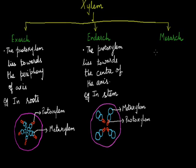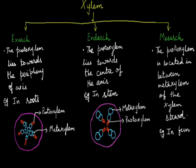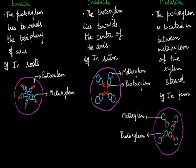The third condition is mesarch, in which the proto-xylem lies between the meta-xylem. The mesarch condition is found mainly in stems. In the diagram, the proto-xylem element is present in between the meta-xylem elements. This covers the different types of xylem based on the relative position of meta-xylem and proto-xylem.